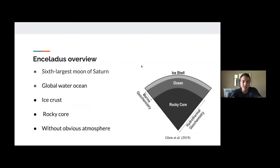Enceladus is the sixth largest moon of Saturn. It is a global liquid water ocean encased in an icy crust. It has a rocky core and no obvious atmosphere.